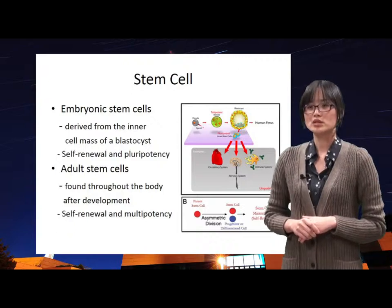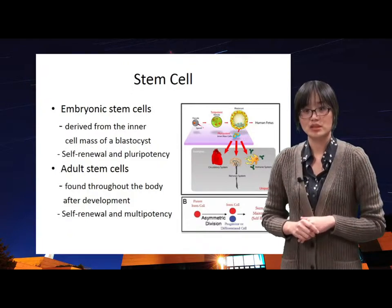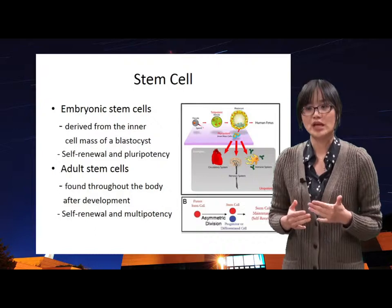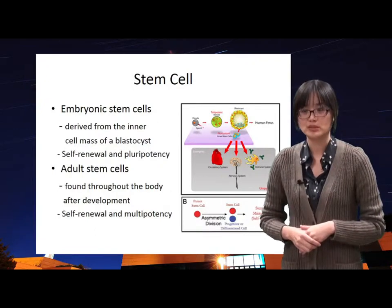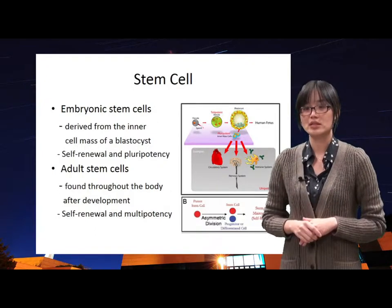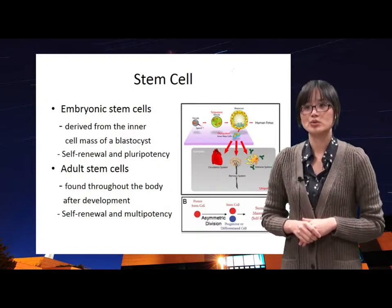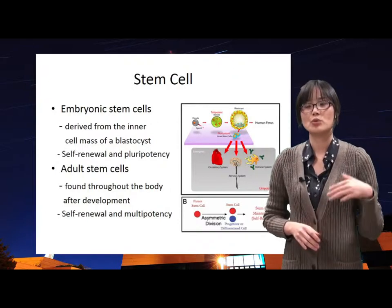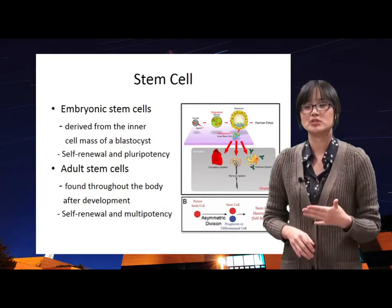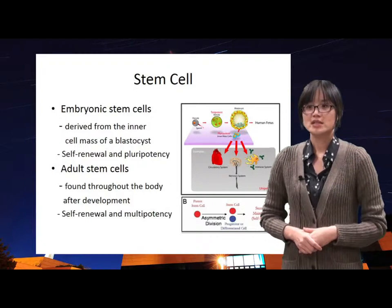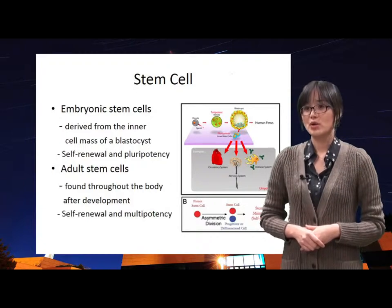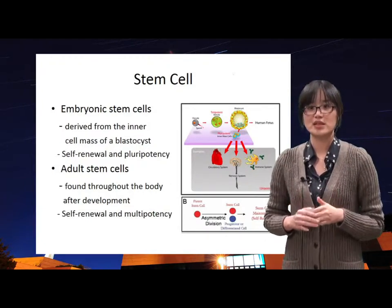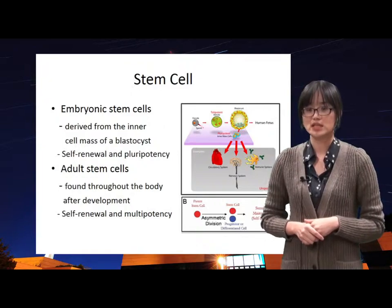The most important properties of stem cells can be represented as self-renewal and pluripotency, whereas other stem cells are also undifferentiated cells found throughout our bodies after development, having two properties such as self-renewal and multipotency.